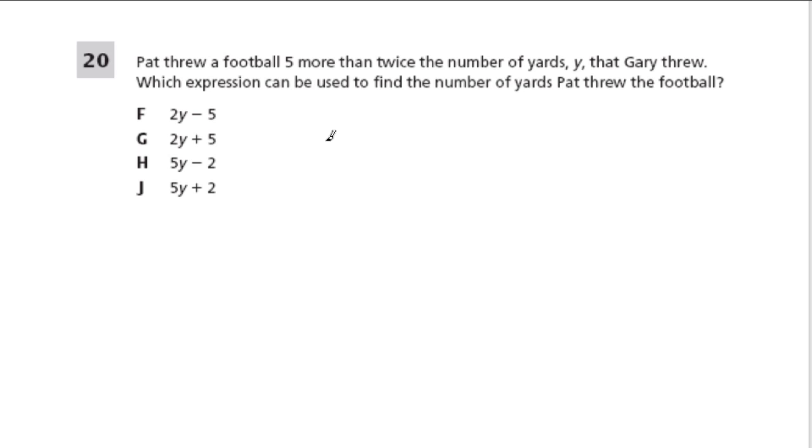Here, Pat threw a football, five more than, adding, more than is a key phrase for addition, five more than twice the number of yards y, so two times the number of yards y that Gary threw. So which expression can we use to find the number of yards Pat threw the football? Well, two y minus five would be five less than twice the yards that Gary can throw. But here is what we got. Five y minus two, that would make sense if you could throw two yards less than five times the number of yards Gary could throw. And then J, again, two more than five times the number of yards that Gary can throw. But here we have G, which is five more than twice the number of yards that Gary can throw.